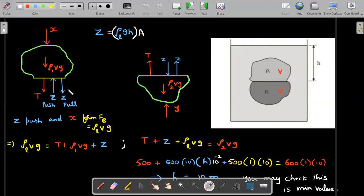So that's what I wrote. So Z push in this diagram and the X from the top form buoyant force. So the buoyant force is always upward. So the upward buoyant force should be equal to the remaining Z pull and the T and the red colored weight ρ₁Vg is what I wrote here.